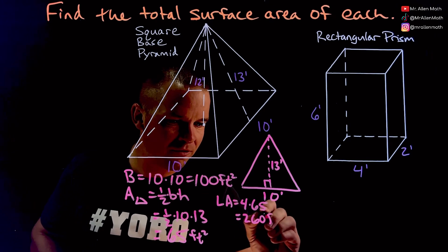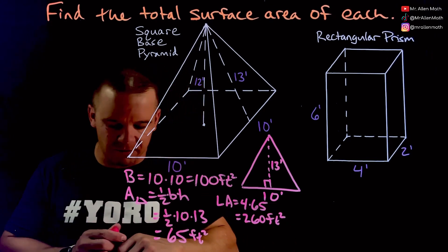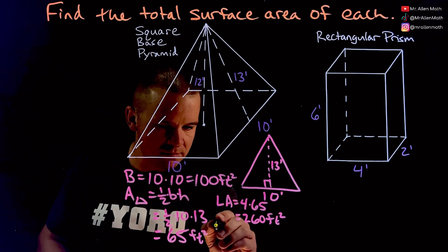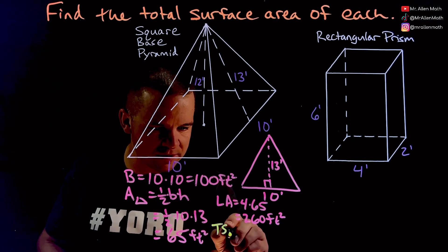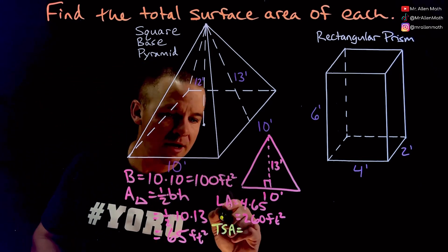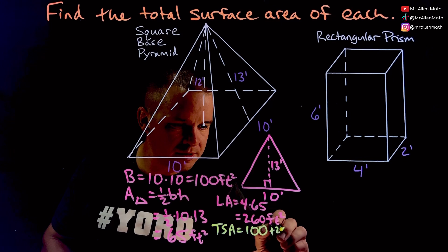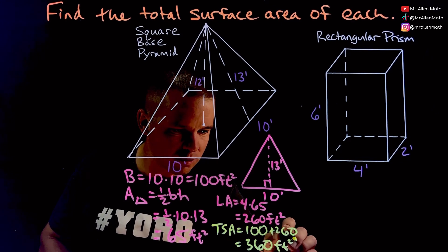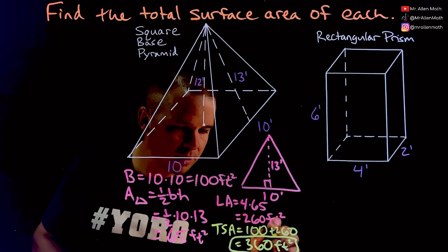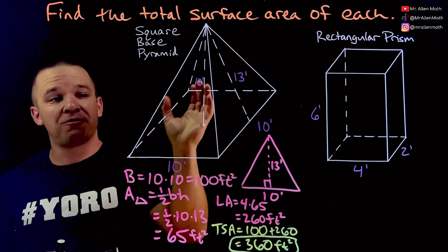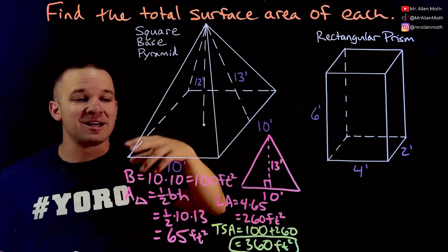Okay so 260 feet squared. So my total surface area, I'll do this in a different color here, let's go with this yellowish color. Total surface area, not TSA, we're not checking bags here, we are checking the math. So I'm going to have 100 plus 260, that's going to be 360 feet squared for this entire square base pyramid.